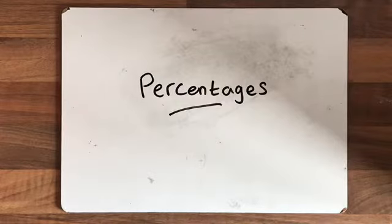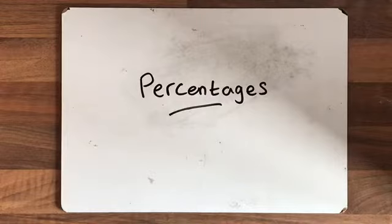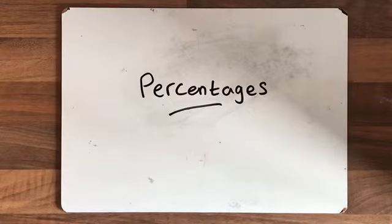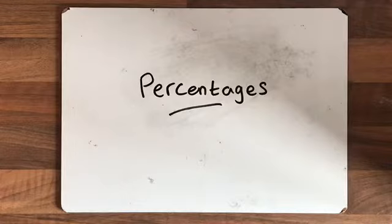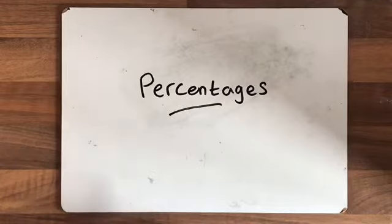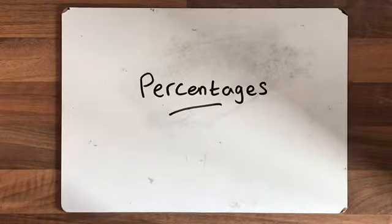So you already have a bit of an understanding of percentages. You see them in all kinds of different statistics — last week we saw them in football matches when it shows the possession that a team has. It's really important to remember that percentages is just a different way of displaying information that is less than one. We've looked at fractions, we've looked at decimals — now we're looking at percentages. Fractions, decimals and percentages are just three different ways of displaying the same information.